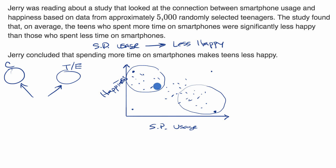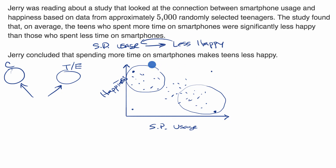But it's important to realize that the causality could go the other way around — maybe less happy teenagers use their smartphones more, and more happy teenagers don't find a need to use a smartphone. Or there could be some variable not even being observed in the study that has a causal relationship with both, causing someone to be less happy and use their smartphone more.